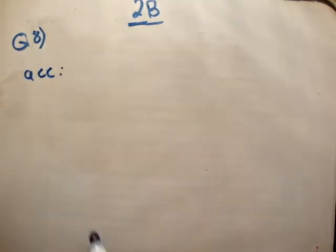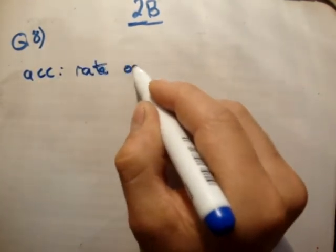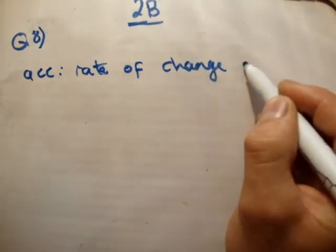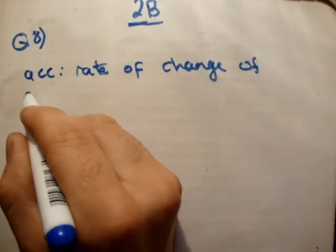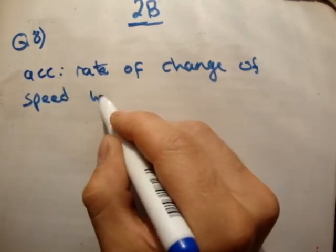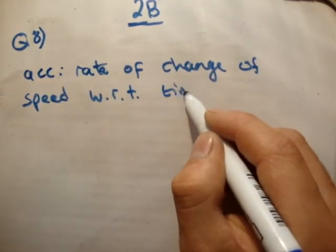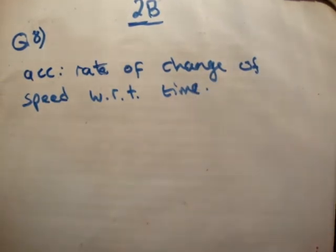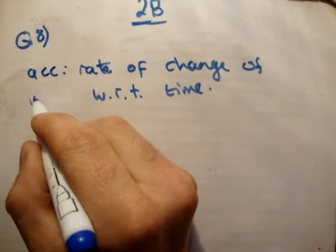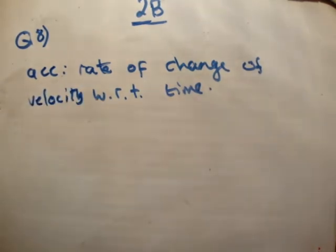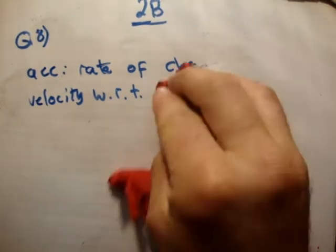First, we need to define uniform acceleration in a straight line. Acceleration is equal to the rate of change of speed with respect to time. Since it's in a straight line, it has a direction, so it's actually the rate of change of velocity with respect to time. That was pretty straightforward.